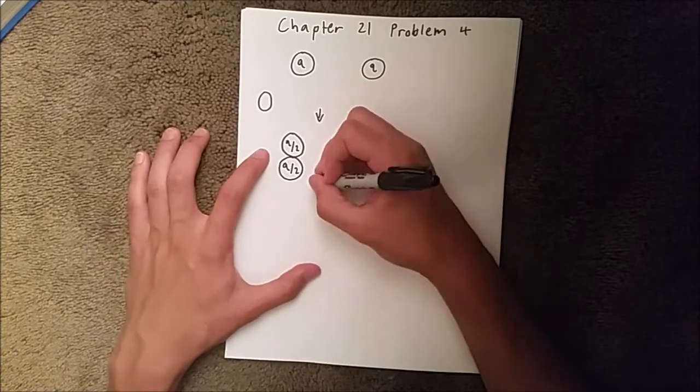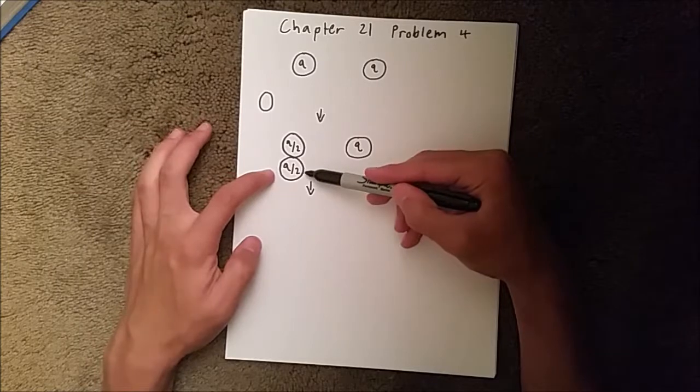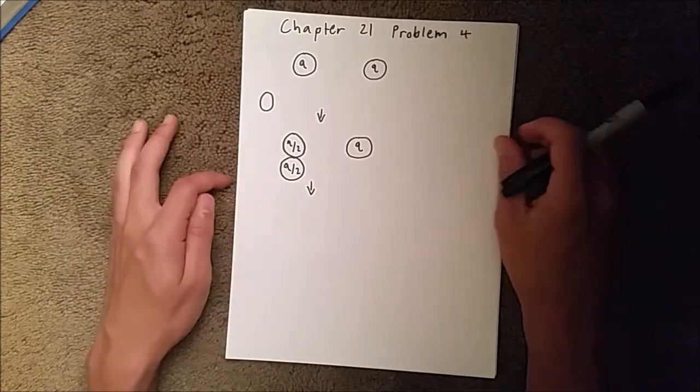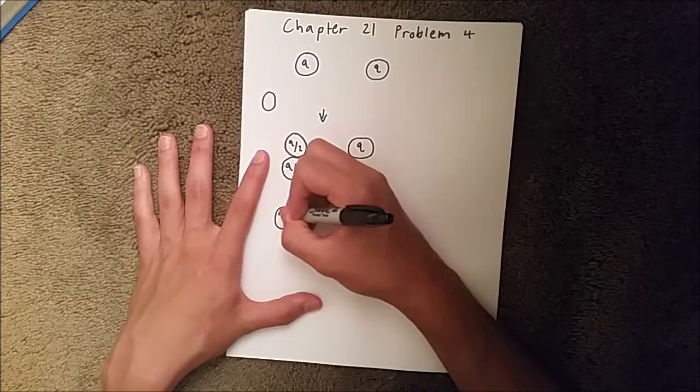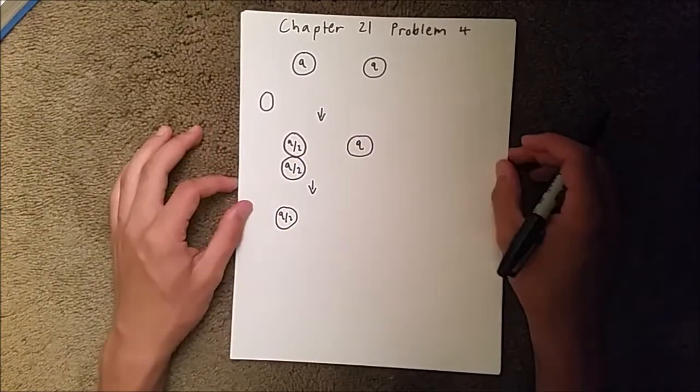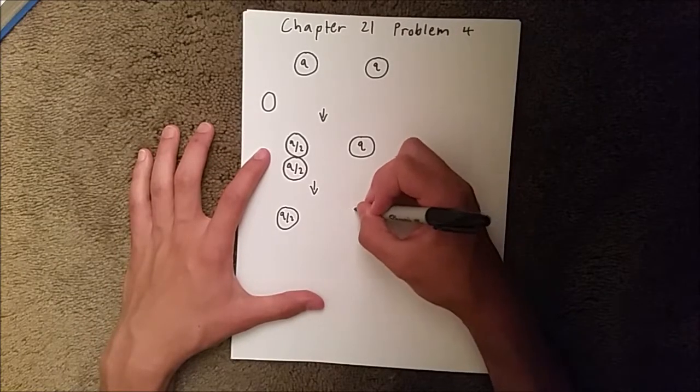In the next situation we take this Q over 2 and then move it and touch it to this one. So we're going to have this same Q over 2 sphere here, and then over here...